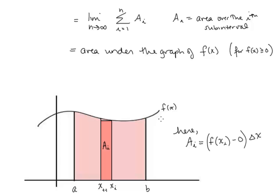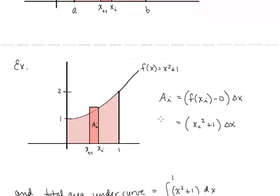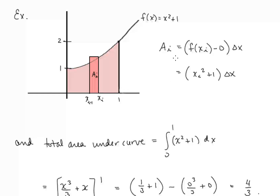When f of x is a positive function — for example, f of x equals x squared plus 1 — the area of the rectangle over the i-th sub-interval would be f of x_i minus 0, so that would be x_i squared plus 1 multiplied by delta x. Here I'm showing a right-hand sum, but remember we can approximate using any Riemann sum because in the limit, as n goes to infinity, we'll always get the definite integral.